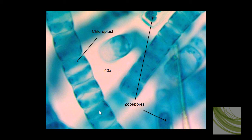And here is eulethrics using the 40x objective. We can see these square-like segments, and this green structure would be your chloroplasts. We can see some kind of fuzzy zoospore areas mixed in here.